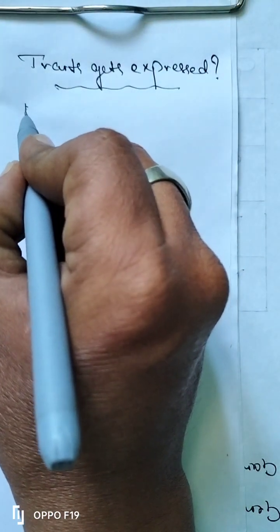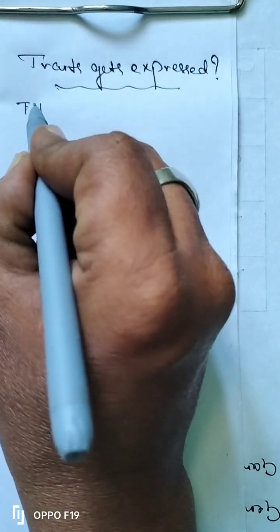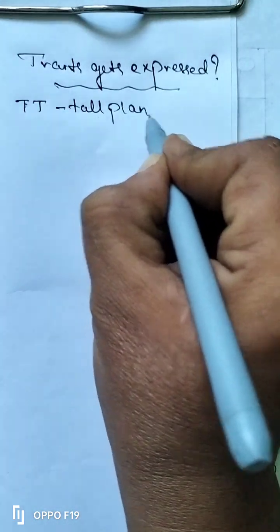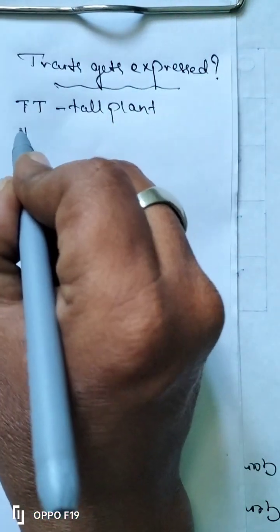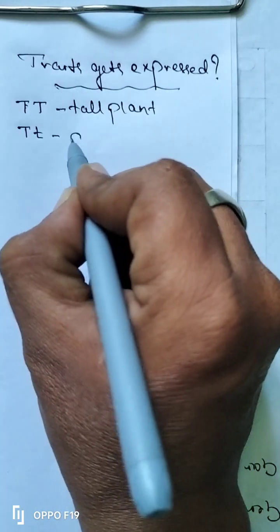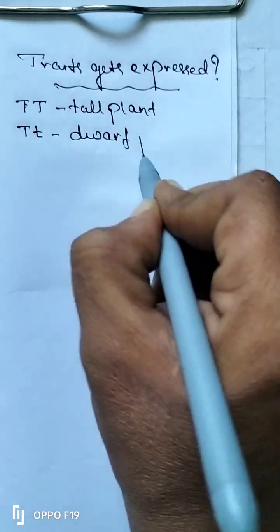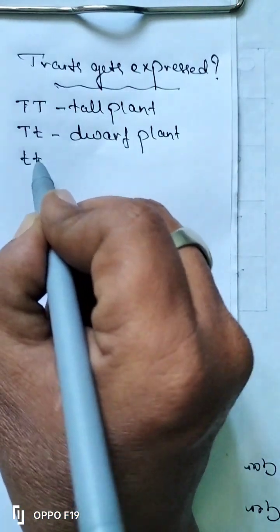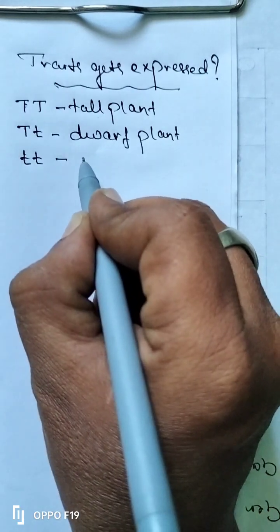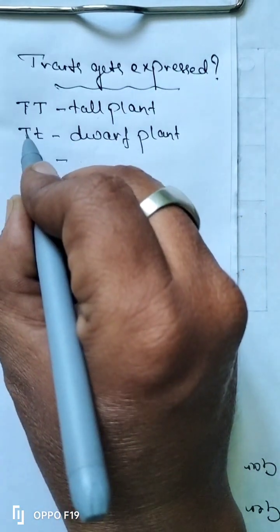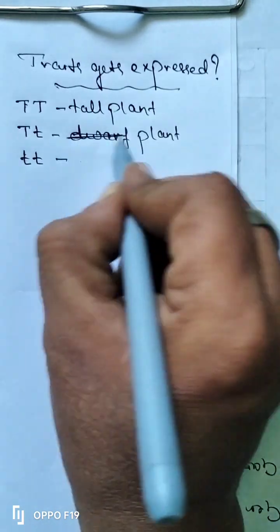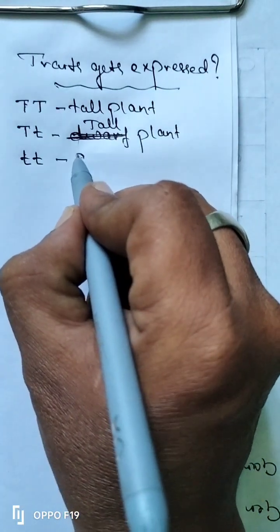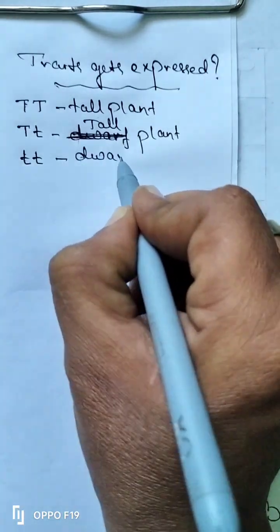We have already studied that if both alleles are capital T, the plant grows as a tall plant. If one is capital T and another one is small t, the plant grows as a tall plant. And if both alleles are small t, then the plant grows as a dwarf plant.